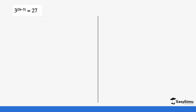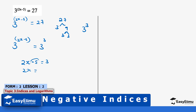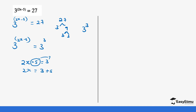We can also work out this question. Notice we don't have the same base, so we have to make them the same base. We have three power (2x minus 5) equals 27. We find that 27 equals three power three, so we substitute: three power (2x minus 5) equals three power three. Since the bases are equal, the indices are equal: 2x minus 5 equals 3. Taking the negative five to the other side: 2x equals 3 plus 5, so 2x equals 8, and dividing by 2, x equals 4.